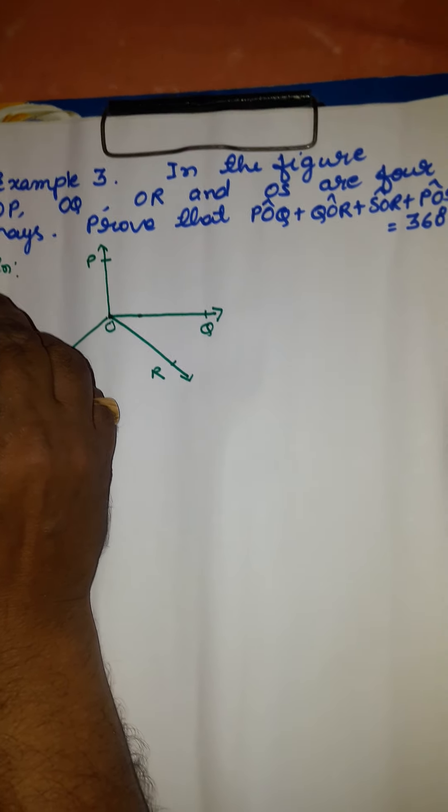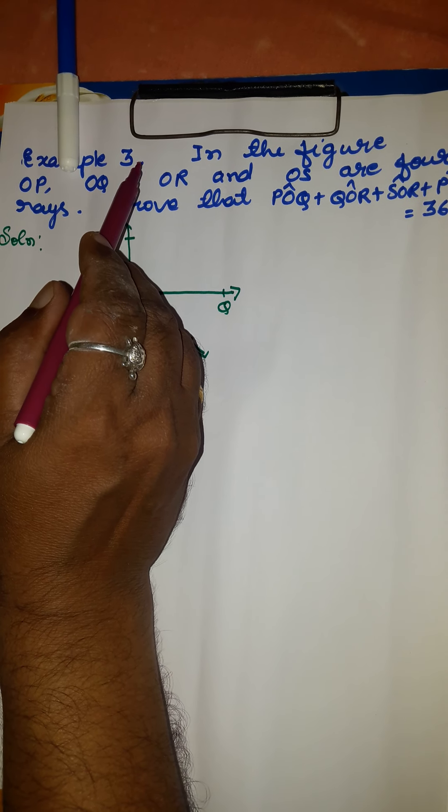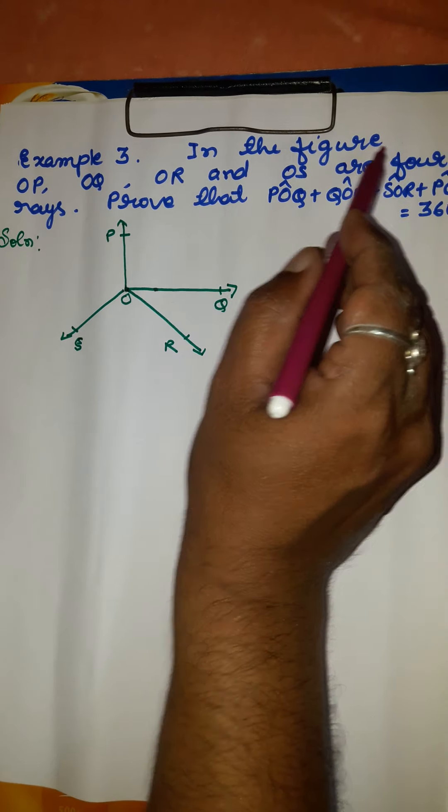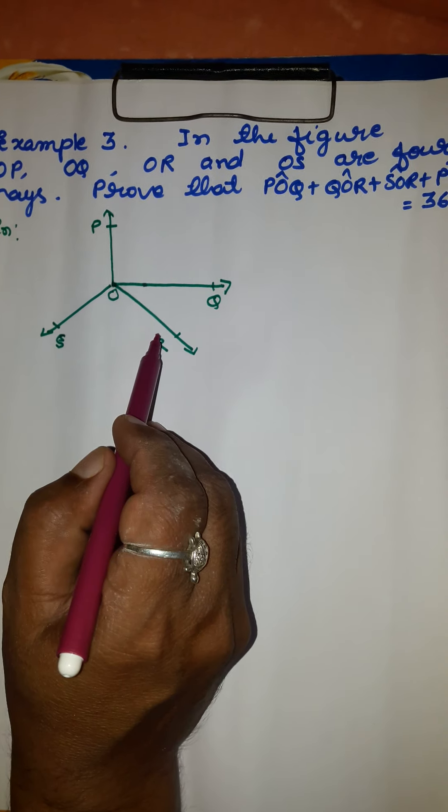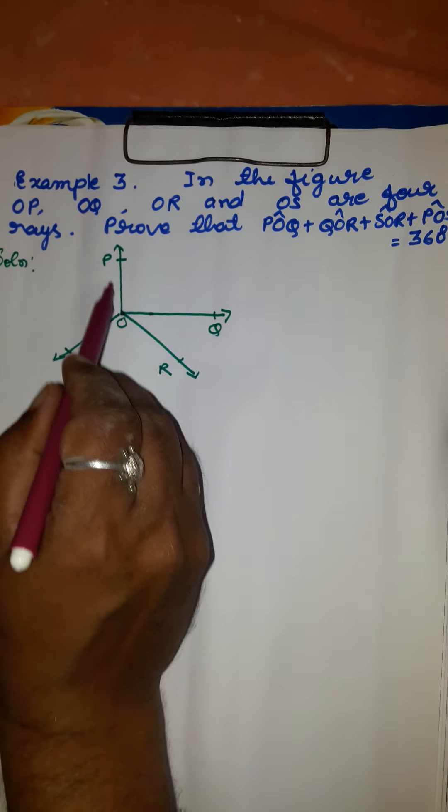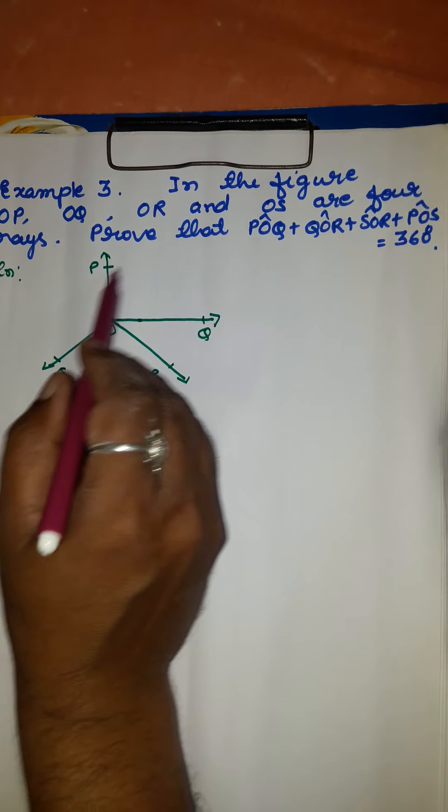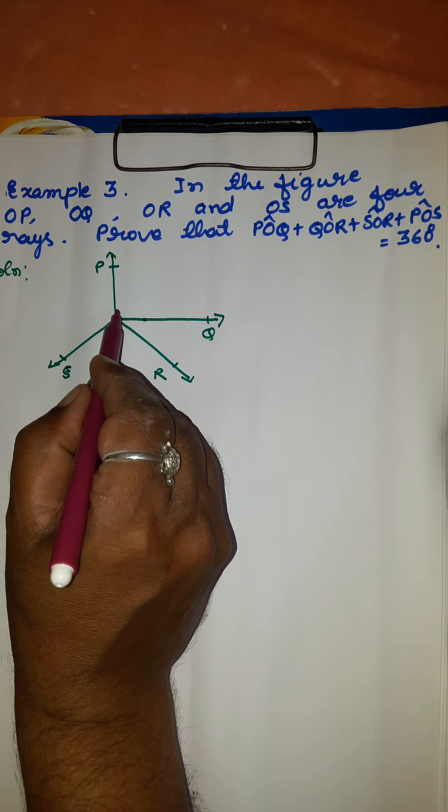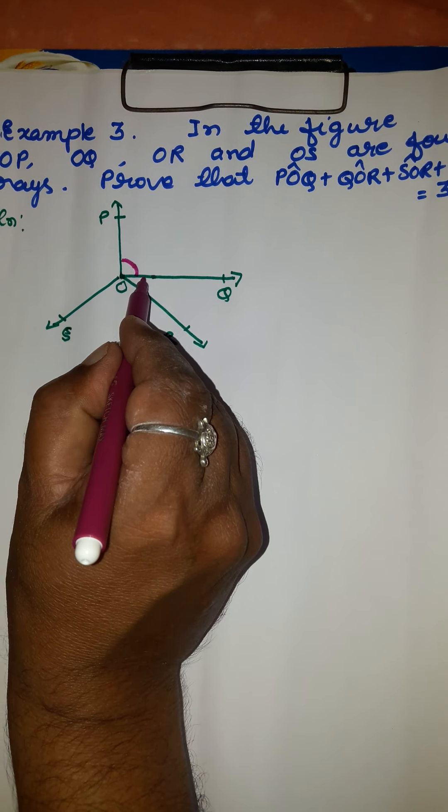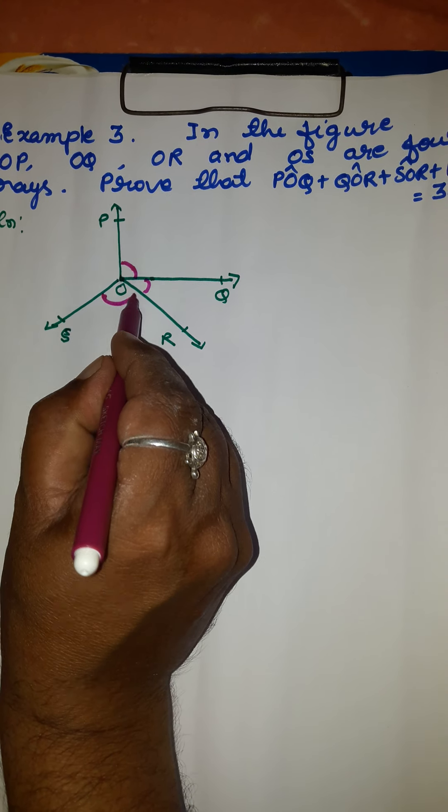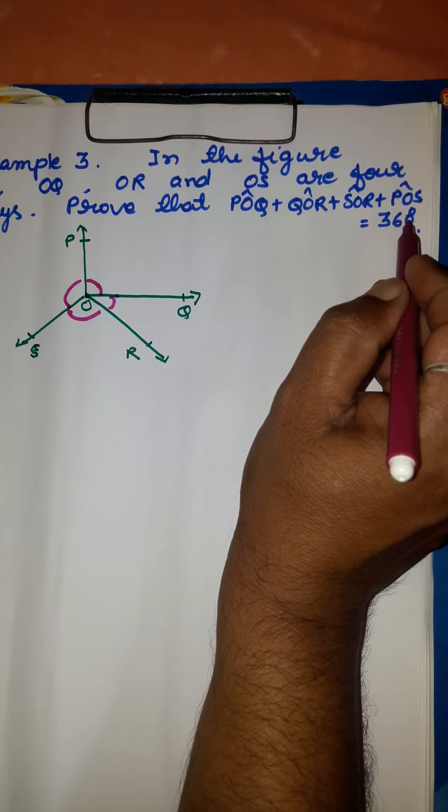Dear students, we shall solve the third example of the chapter Lines and Angles. In the figure, OP, OQ, OR, and OS are four rays. We have to prove that angle POQ plus angle QOR plus angle SOR plus angle POS equals 360 degrees.